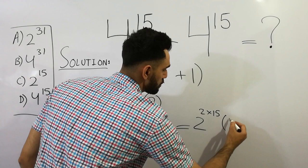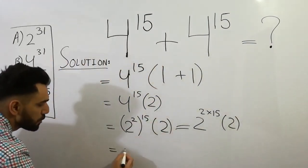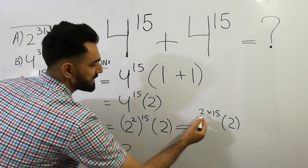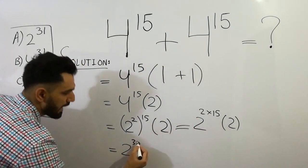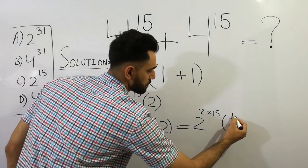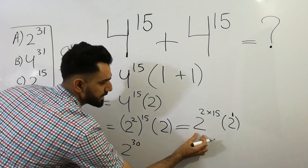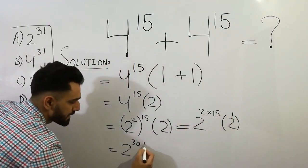And this value is 1, which is 2 to the power 1. So you can write: base is the same, so powers will be added: 30 plus 1.